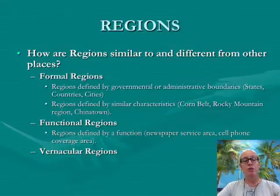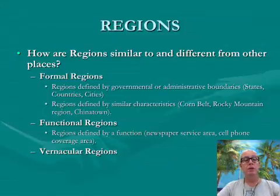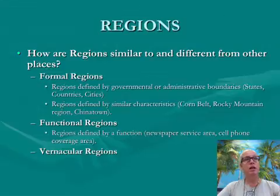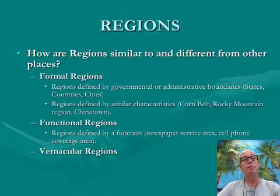We have functional regions — for example, where does the Calabasas patch go? That is the Calabasas region it would go to. You might look at it in terms of cell phone reception: this tower serves this particular region, and this area is where you would get your phone reception from.